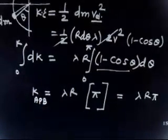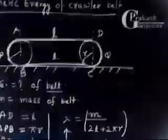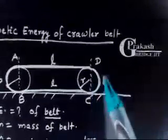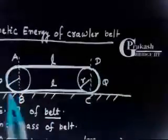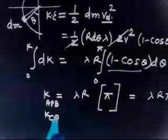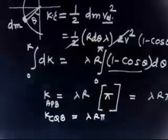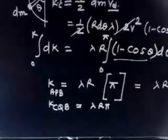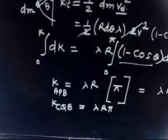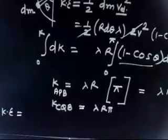By symmetry, the kinetic energy of part CQD is the same as part APB. So KE of CQD = v²λrπ.